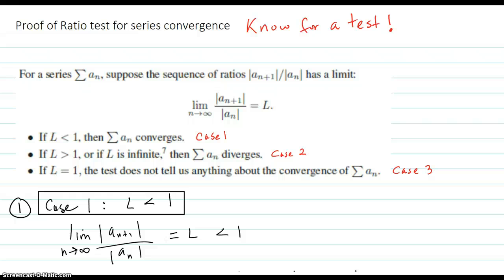Here is the proof of the ratio test, testing to see if a series converges or not. So you start off with your series, and you build up this ratio of the next value divided by the previous. And if it has a limit, then we'll call that limit L.